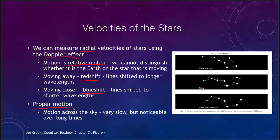There is also a transverse velocity, which we measure as proper motion. This is very slow but is noticeable over long times. Here is the Big Dipper as we see it today — however, 50,000 years ago the Big Dipper looked nothing like it does today, you can see how it's been stretched out. Five of the stars in the middle are moving in roughly the same direction through space, so their relative positions stay the same.